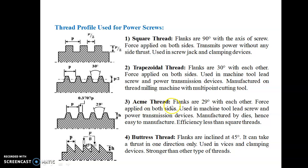Acme (Seme) thread — the only difference from trapezoidal is that the angle included by the flanks is 29 degrees. Also used in machine tools, lead screws, and power transmission; manufactured by dies and hence easy to manufacture. Buttress thread — flanks are inclined at 45 degrees.